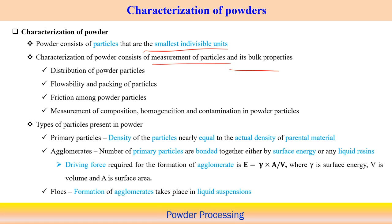Regarding types of particles present in powder: primary particles have a density nearly equal to the actual density of the raw or parent material. Agglomerates are a number of primary particles bonded together by surface energy or sometimes by liquid resin — essentially a cluster of powders staying together.